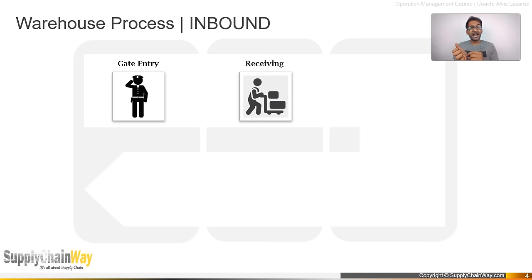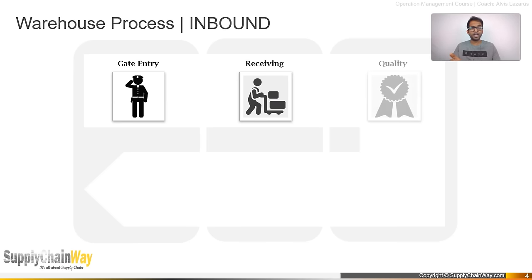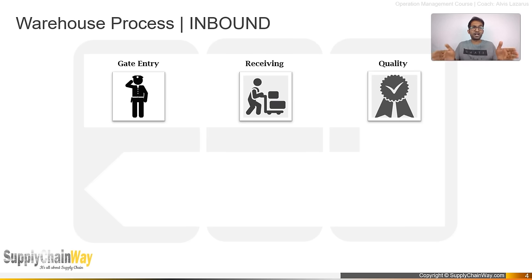The packing list that comes with the documentation will state how many handling units — that is, how many pallets — are in the shipment, and this is validated during unloading itself. Once everything is unloaded onto the inbound staging area, a quality check is performed. This relates to a key metric called truck turnaround time — the time from when a truck is docked until you complete the process and give the go-ahead to the supplier.